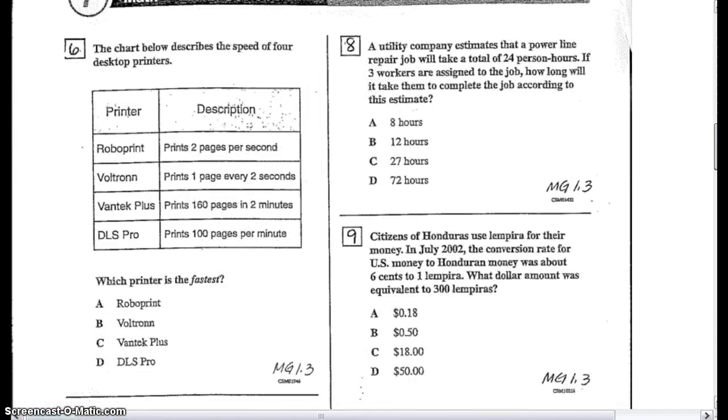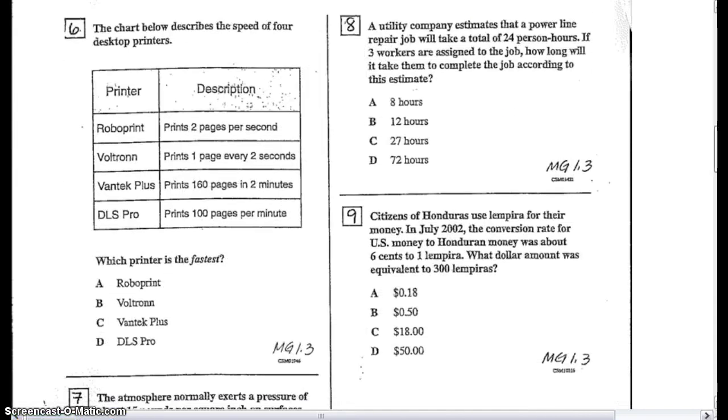Okay, on the back side, let's look at number six. We're looking at the fastest printer. So here we have each of the printers listed. Some of them are listed per second, like the first two. And the last two are listed per minute. So what we could do is we can change them all to per second. So it's easier to compare which one is fastest. So let's go ahead and change these two to seconds.